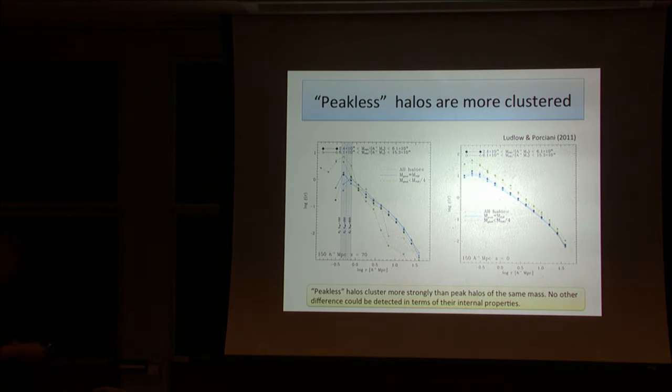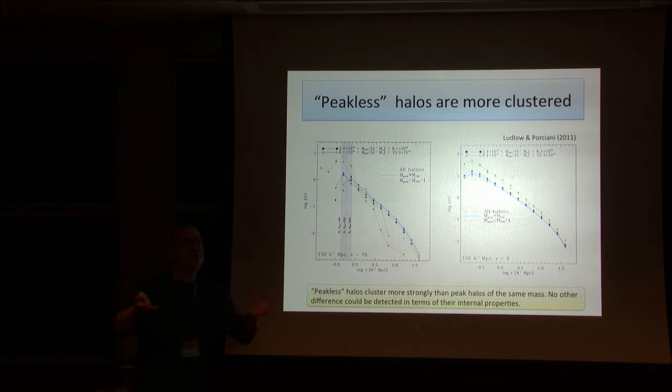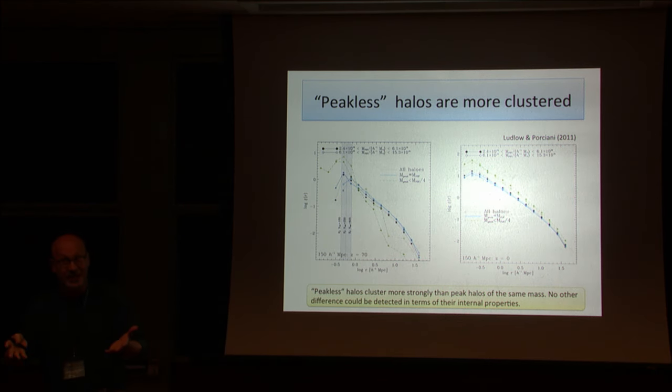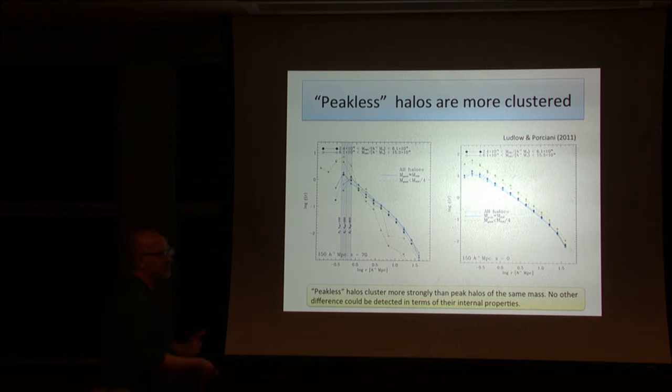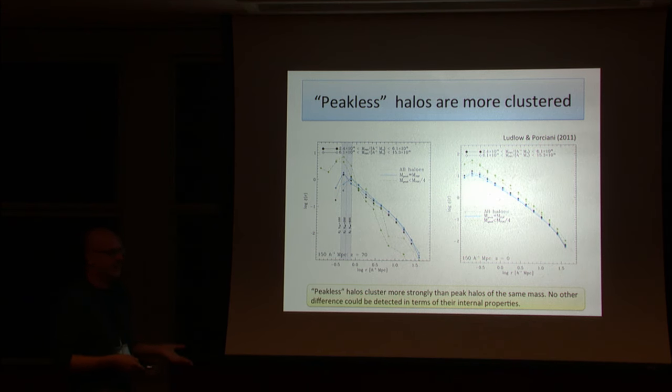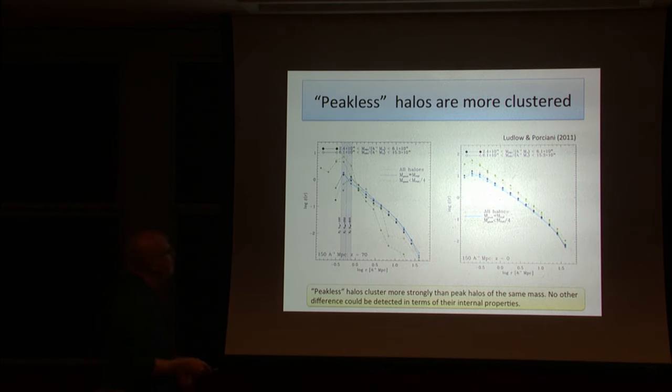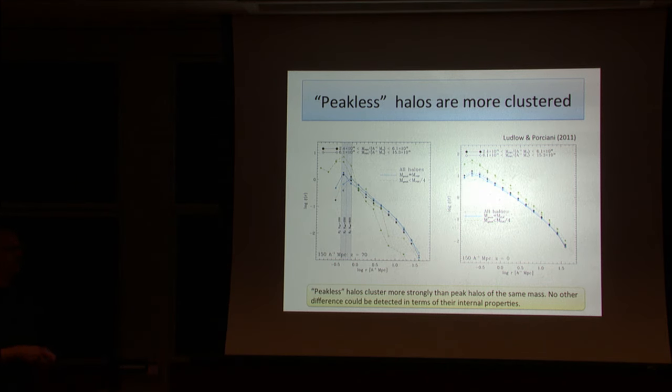We tried hard to understand whether, in the final conditions, there is a difference between the peak halos and the peakless halos. We looked at density profiles and so on; we couldn't find anything. The only thing we found is that they are substantially more clustered. The peakless halos have much higher clustering, almost a factor of two in the correlation function compared to peak halos. The funny thing is that they're more clustered in Eulerian space but less clustered in Lagrangian space. So there must be a velocity bias effect here that alters the one from Lagrangian to Eulerian.